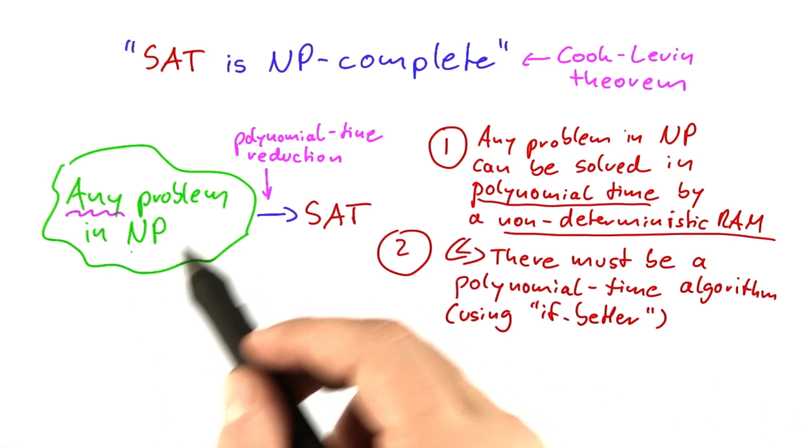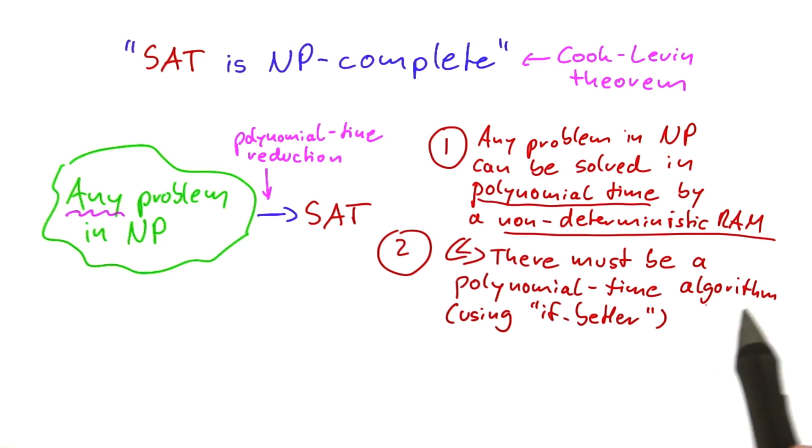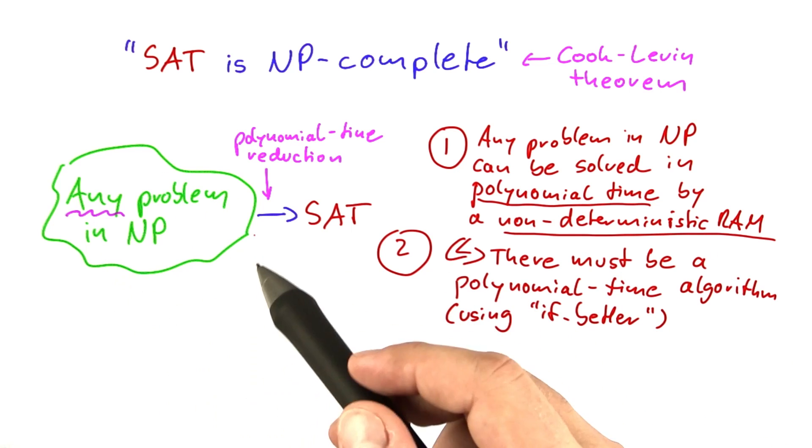But we know that if a problem is in NP, then even without explicitly having to come up with this algorithm, we know there must be one because otherwise this problem would not be in NP.